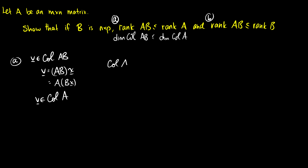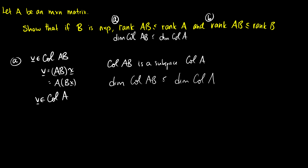Since any vector in the column space of AB is also in the column space of A, the column space of AB is a subspace of the column space of A. Therefore the dimension of the column space of AB is less than or equal to the dimension of the column space of A, which means rank(AB) is less than or equal to rank(A). The first part is now done.